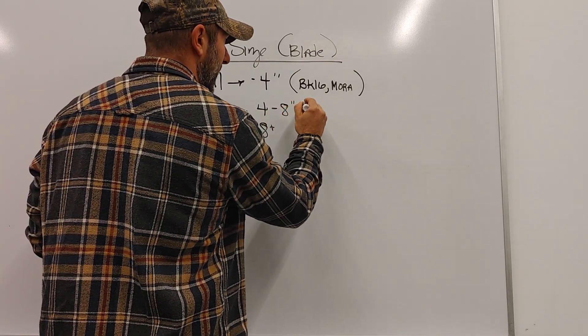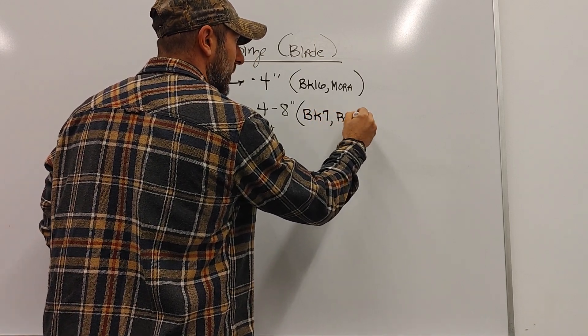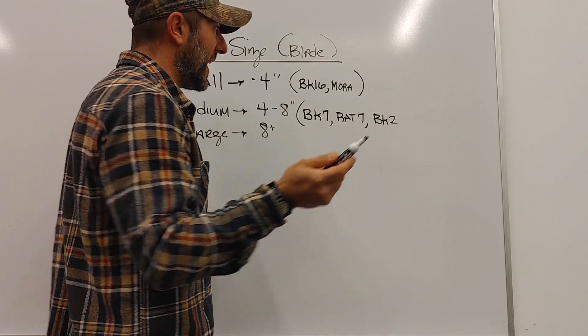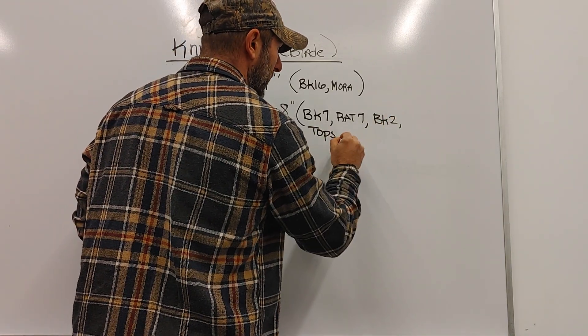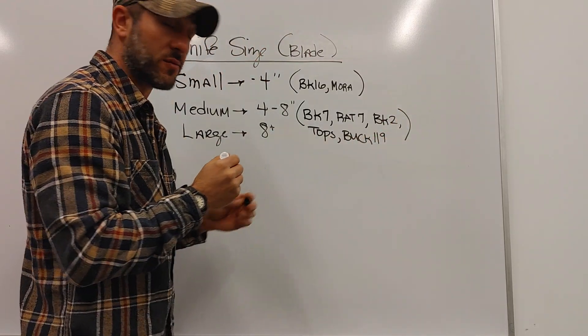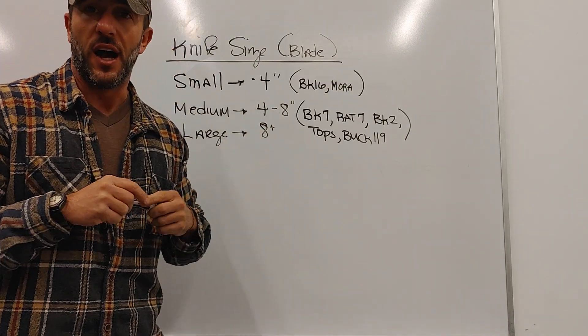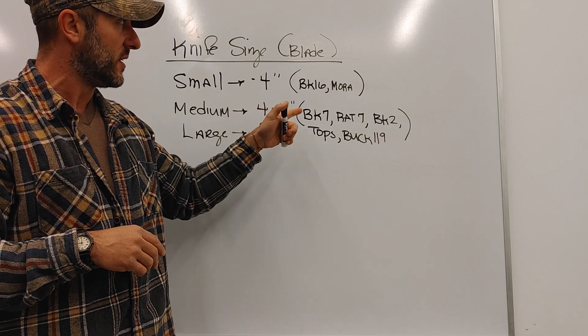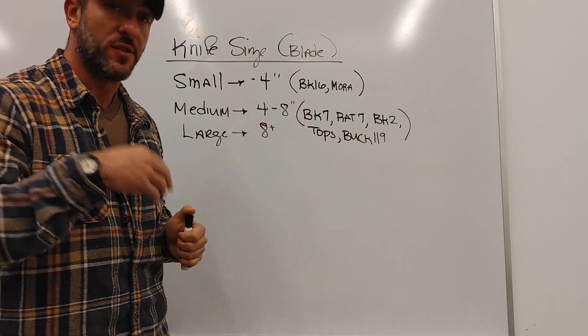Here we've got knives like the BK7, the Rat 7, the BK2, the SC5, the Tops Prather Bowies, even the Buck 119, which is one of my favorites. Now we have a knife where we can do some chopping. It is easier, especially with the BK7, the Rat 7, and the Tops. We're in the seven inch range, so now we're getting the ability to chop which makes a lot of things easier.